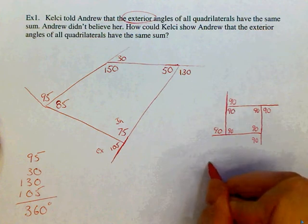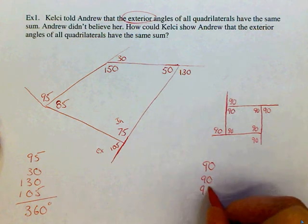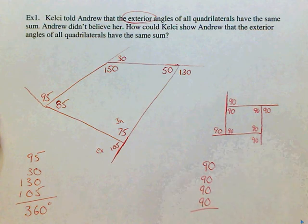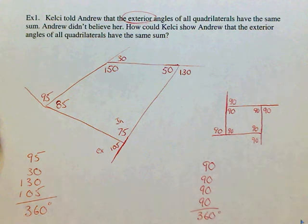So in this object, I've got 90 plus 90 plus 90 plus 90. And of course, we can add these in our head to get 360 degrees. So the exterior angle on both of our objects was 360. So we can say that the exterior angles of any quadrilateral, when you add them up, they are the same.